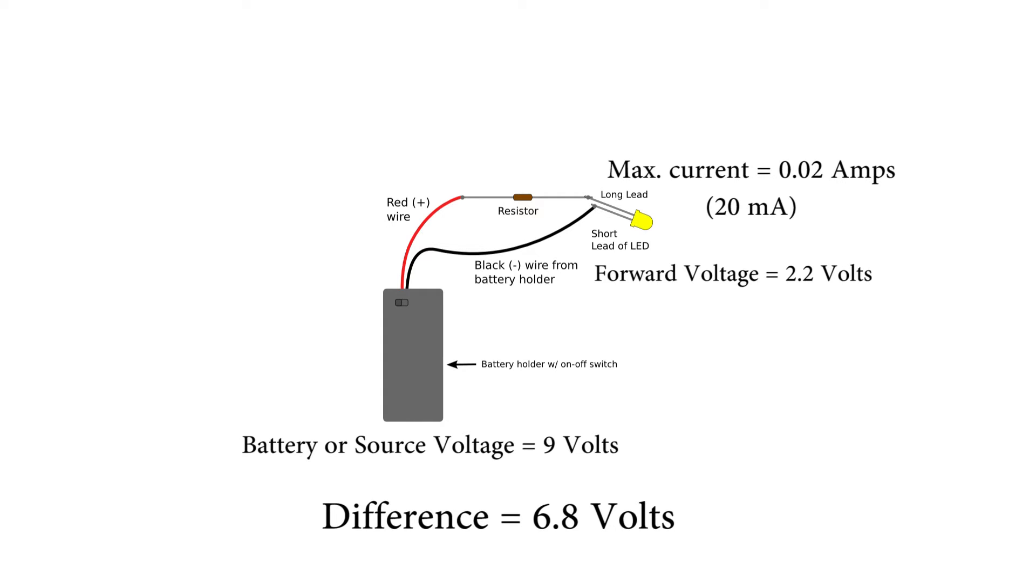Now, if we have 20 milliamps flowing through the circuit everywhere, all the time, that means we must have 20 milliamps going through our resistor. Now we're getting somewhere. Because what are we going to do with that 6.8 volts? We're going to let it drop across the resistor. So how do we know what value of resistor to use? As it turns out, it's actually pretty simple. A resistor is measured in ohms. But what the heck is an ohm? Actually, it turns out an ohm is voltage divided by current. And guess what? We know both of those.